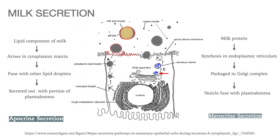For carbohydrates and proteins, these substances accumulate in Golgi-derived secretory vesicles. These vesicles are transported to the apex of the cell, where the vesicle membrane fuses with the apical plasma membrane and the contents are discharged. This is the merocrine type of secretion.